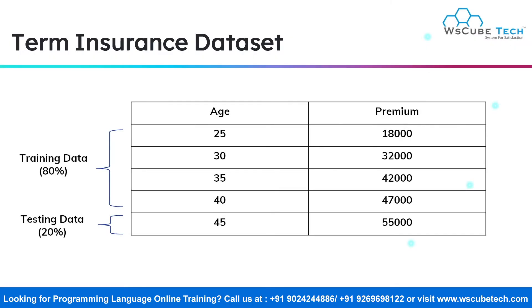Say you have this term insurance dataset, and it simply says that as the age of a person increases, the premium increases too, because with increase in age, the risk factors rise as well. Now, in order to train our model, we require data. We can either train our model using the entire dataset or use only some part of it.